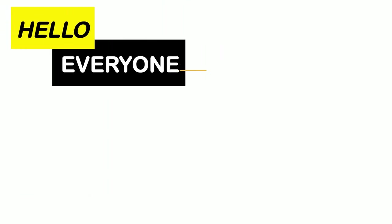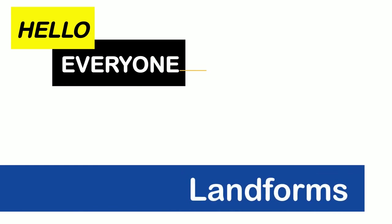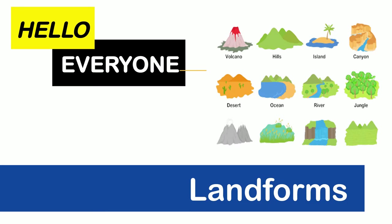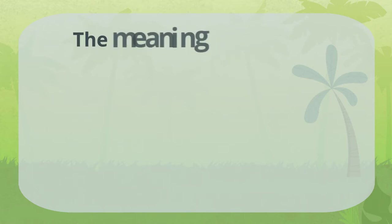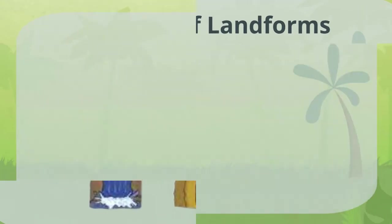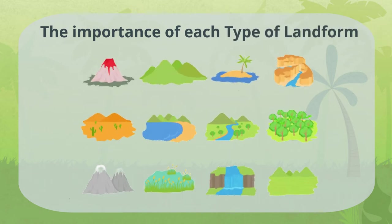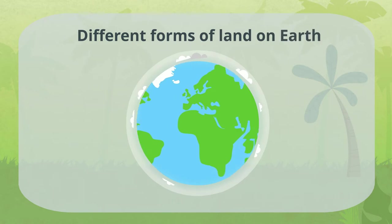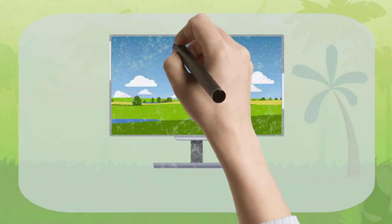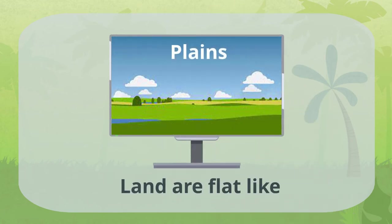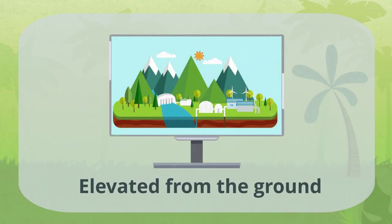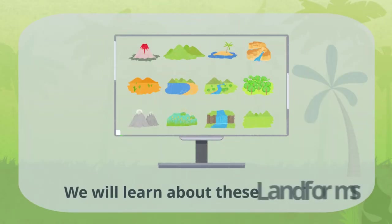Hello everyone, today's topic is about landforms. We will be learning about the meaning of landforms, the types of landforms, and the importance of each type. There are different forms of land on Earth. Some parts of the land are flat like plains, while others are elevated from the ground such as mountains. These are called landforms.